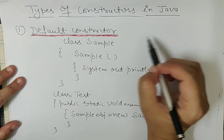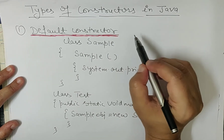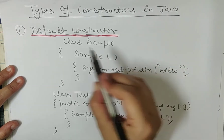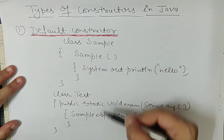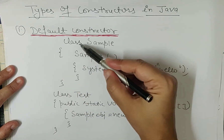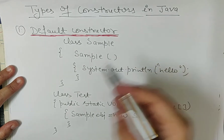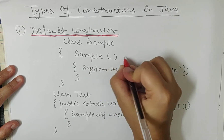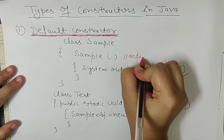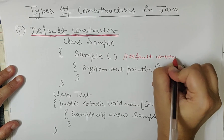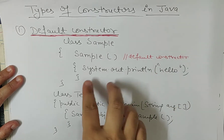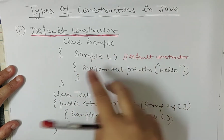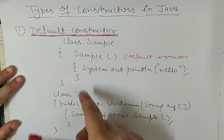So let's get started. The first type is the default constructor. A default constructor is one that has no parameters — that is what makes it a default constructor. Let's look at this simple program. I have made a class, and this is my default constructor. It is a default constructor because its parameter list is empty. Inside it, I have printed a simple statement: 'Hello'.